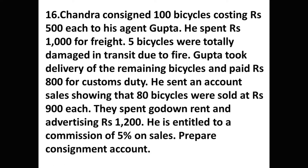Chandra consigned 100 bicycles costing 500 rupees each to his agent Gupta. He spent 1000 rupees for freight. Five bicycles were totally damaged in transit due to fire. Gupta took delivery of the remaining bicycles and paid 800 rupees for customs duty. He sent an account sales showing that 80 bicycles were sold at 900 rupees each. He spent 1200 rupees on godown rent and advertising.